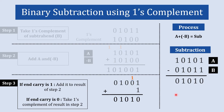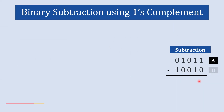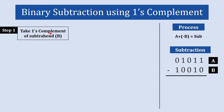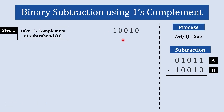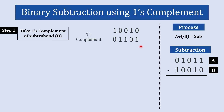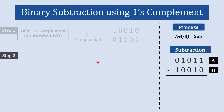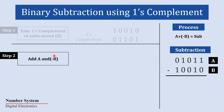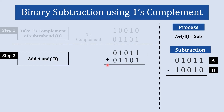Now let's take another example to understand the second option. In step number one, we take the one's complement of the subtrahend. The subtrahend is converted by inverting all bits, giving 0 1 1 0 1 as its one's complement. In step number two, we add the minuend 0 1 0 1 1 and the one's complement of the subtrahend 0 1 1 0 1.